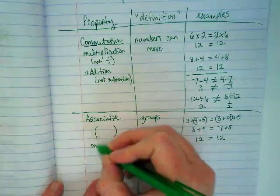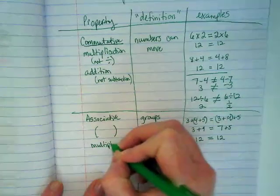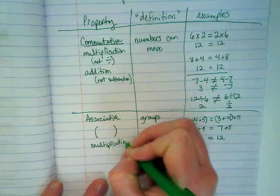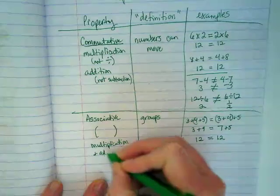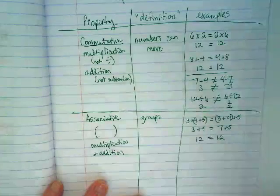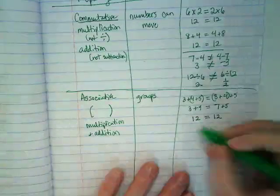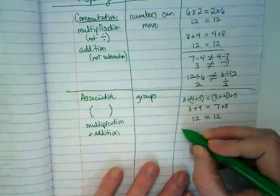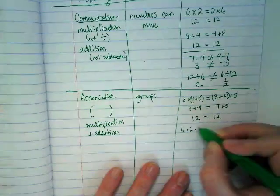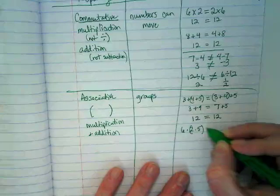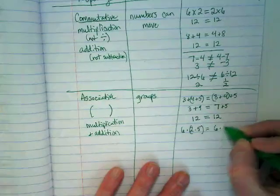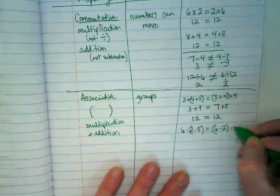This also works with multiplication and addition, but not with their inverses. I'll do a quick example of multiplication: (6×2)×5 equals 6×(2×5).